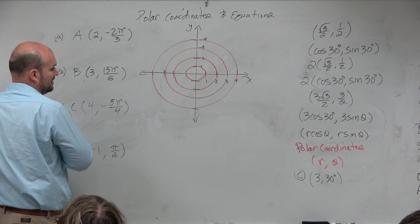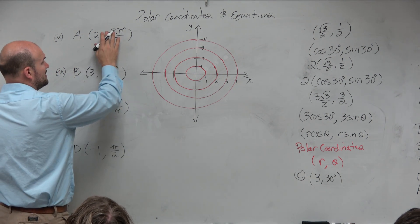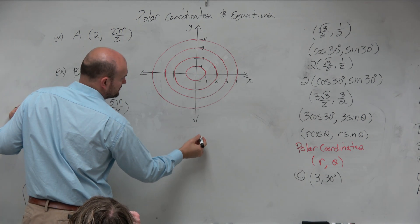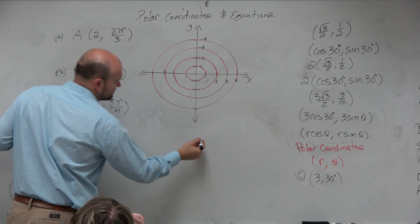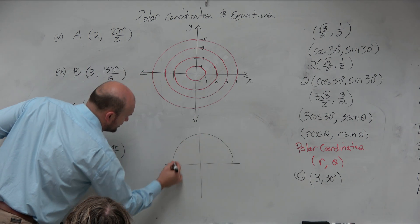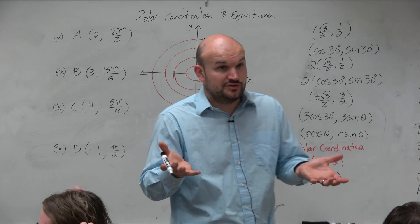And then we just need to graph where is... oh, that was supposed to be positive. Sorry about that. Where is positive 2π/3? Well, let's just keep it positive. So what I like to do is go back to your memory of the unit circle, right?